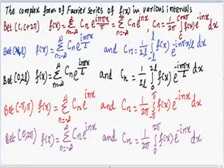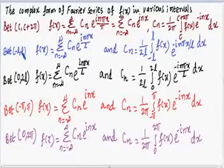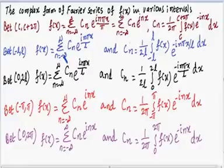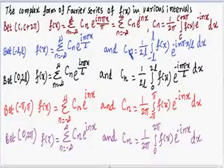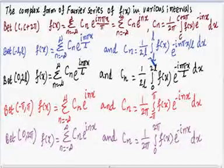Between the interval −l to +l, f(x) = Σ (n = −∞ to +∞) c_n · e^(inπx/l), and c_n = (1/2l) · ∫[−l to l] f(x) · e^(−inπx/l) dx.